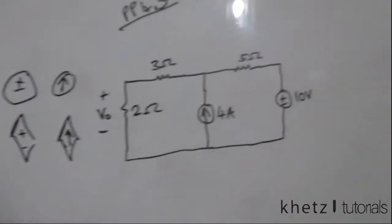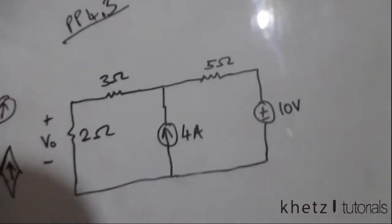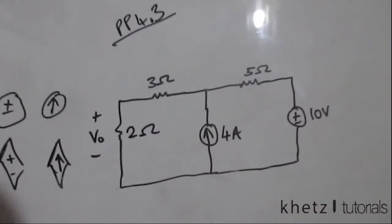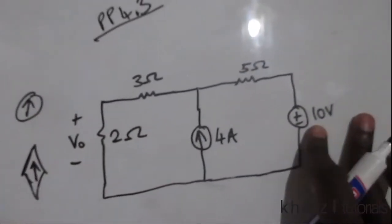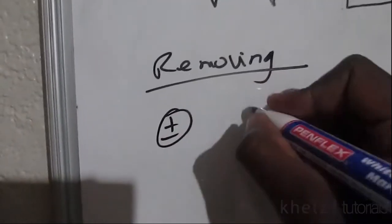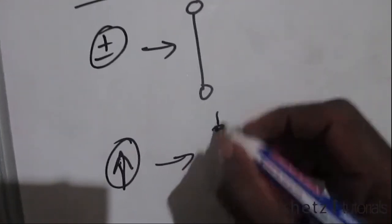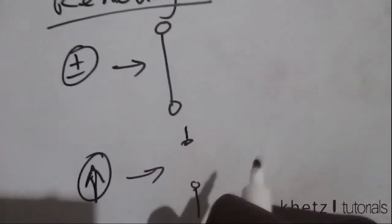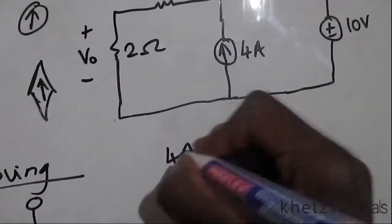We have two independent sources here: a current source and a voltage source. They are removed differently. When you remove a voltage source in superposition you are left with a short circuit. When you remove a current source you are left with an open circuit, which is the same as not having anything at that point. Let's start with the contribution of the 4 amperes.